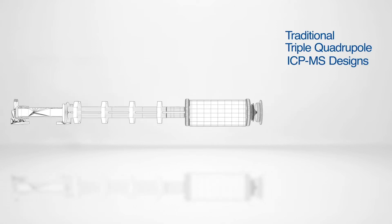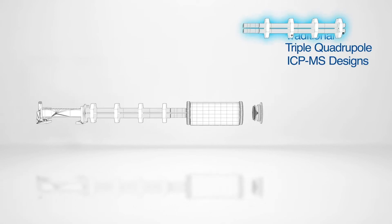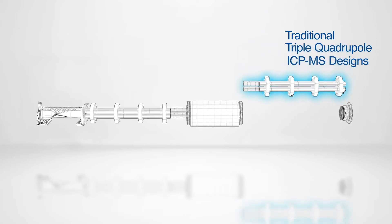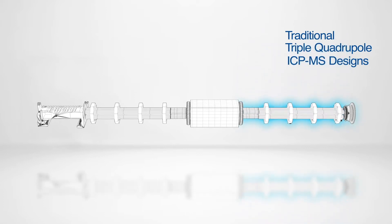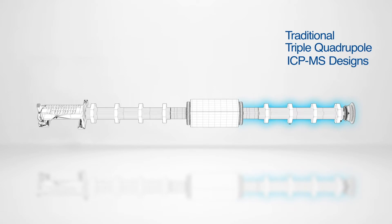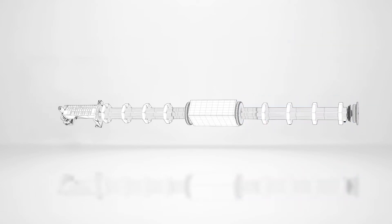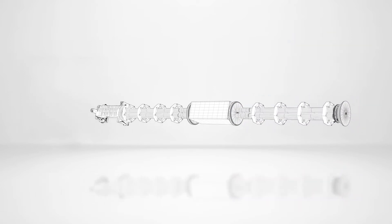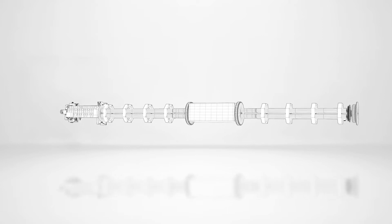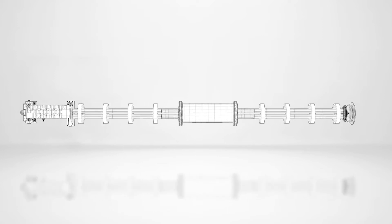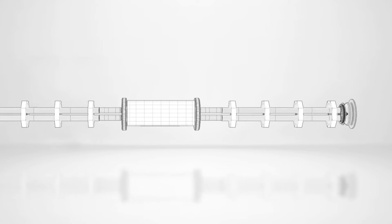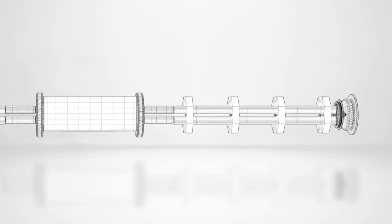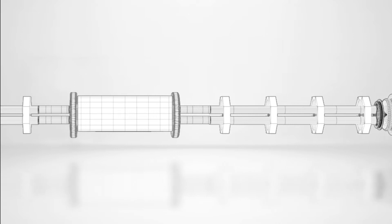In traditional triple-quad ICP-MS designs, a quadrupole mass filter is placed before the cell so that ions which are not at the mass of interest can be removed. This provides some level of control over the reactions in the cell. However, what about situations where simply having an additional quadrupole before the cell isn't enough?